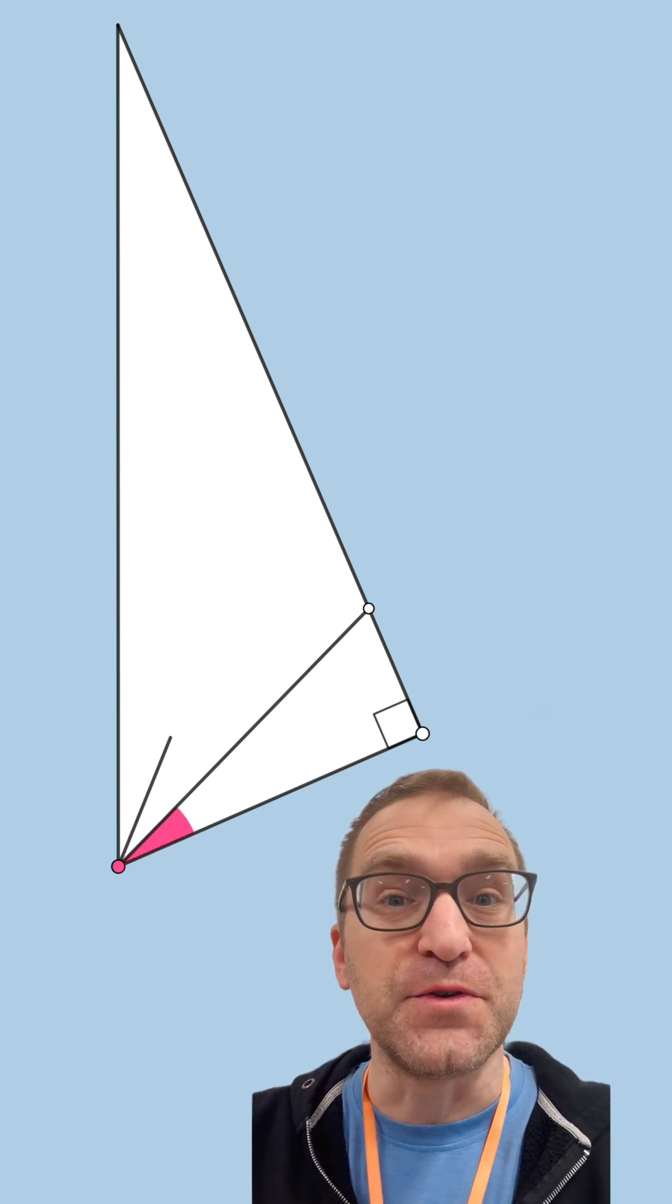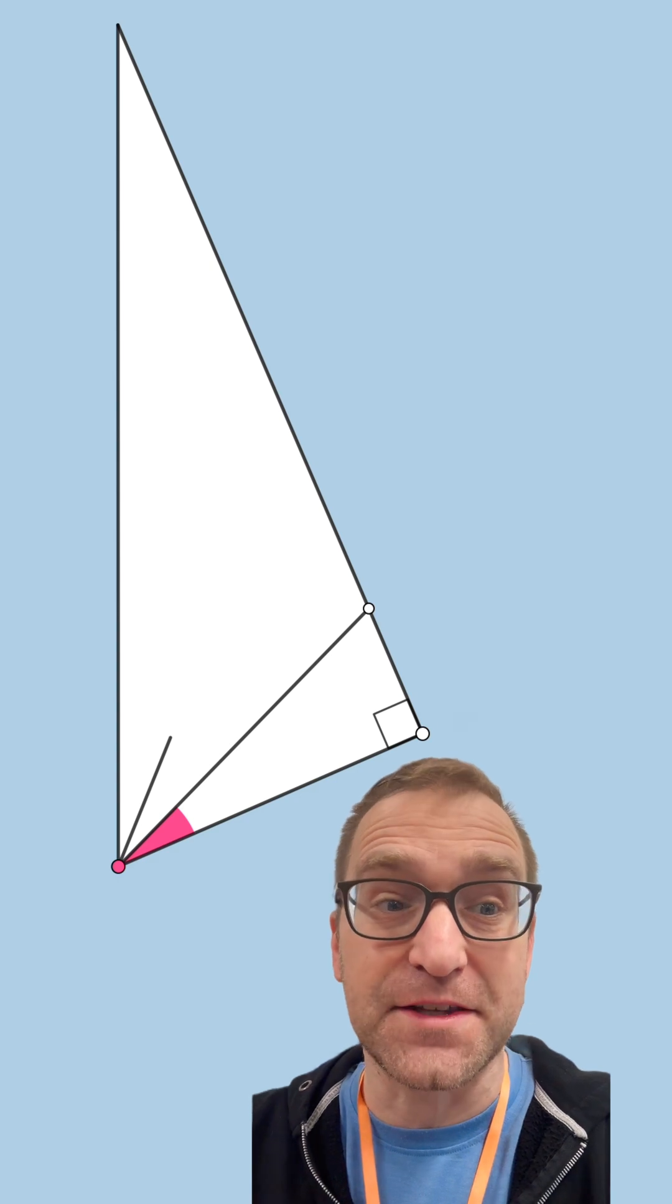Trisect means we're going to cut that into three congruent or three equal angles. We've just trisected it right there.